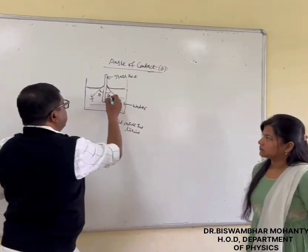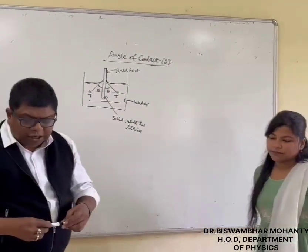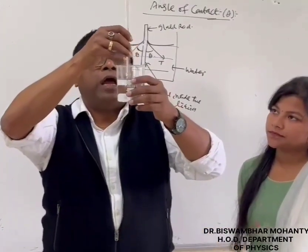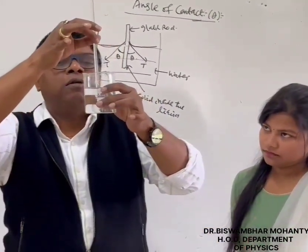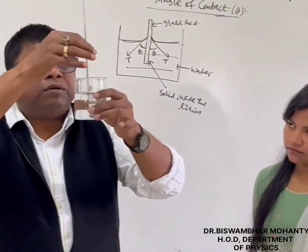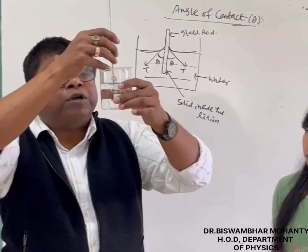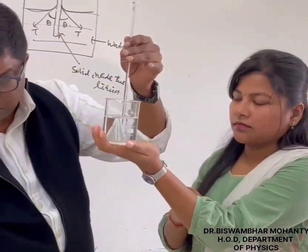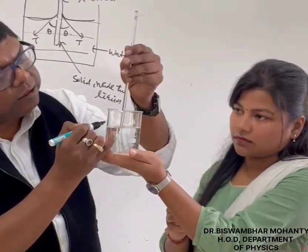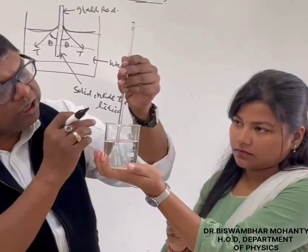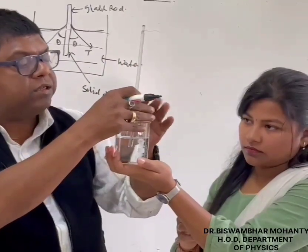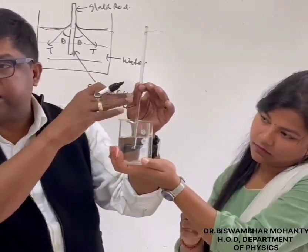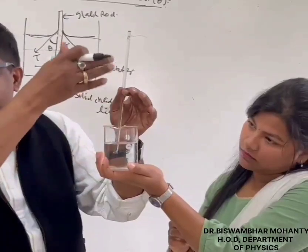This angle is known as the angle of contact. In this case, you can see the container in which water is taken, and you place a glass rod inside the water. The point of contact between the water and the glass rod is slightly elevated. The level is slightly elevated, which implies because the force of adhesion is greater than the force of cohesion.